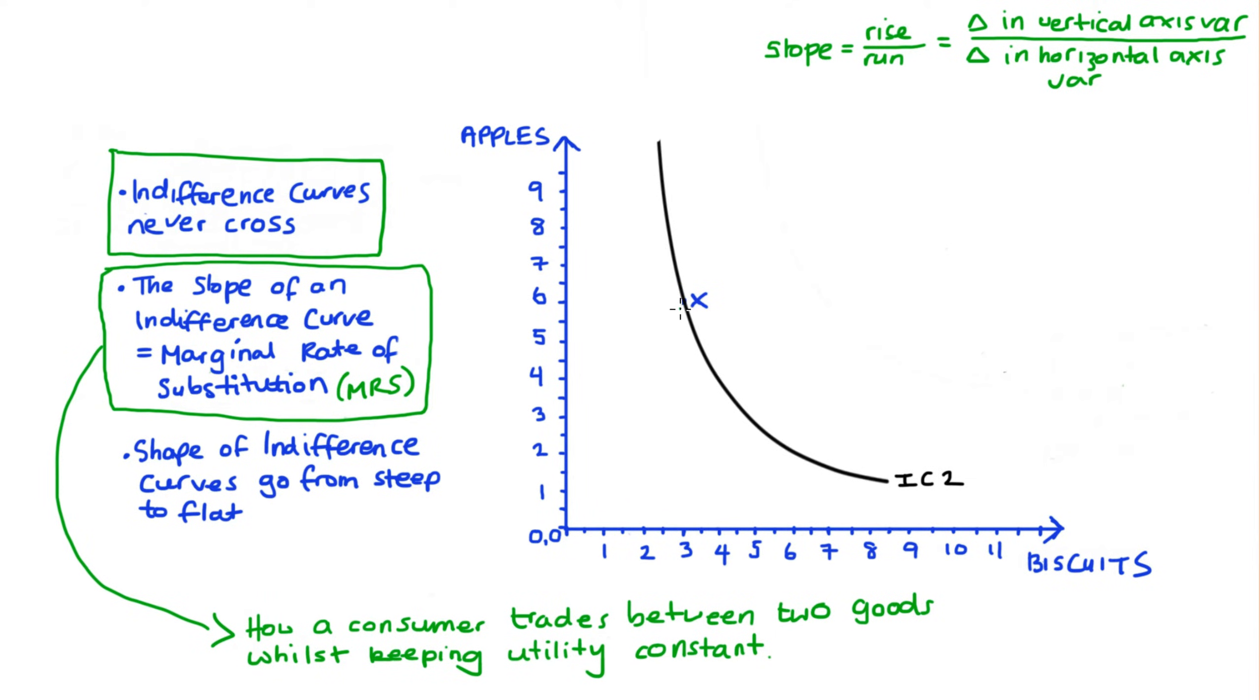If we decreased our consumption of, say, apples, maybe someone took some apples away from us. Well, in order to keep our level of satisfaction constant, we would need to increase the amount of biscuits that we have in our bundle. Now let's just call that new bundle bundle W.